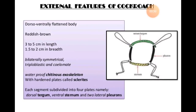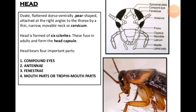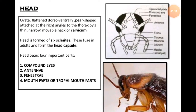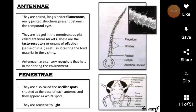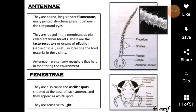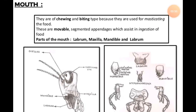On the basis of all these things we can understand about their eating habits, external features, and their body divided into different parts. You will have learned about their head which contains compound eyes, antenna, and different parts of the mouth.